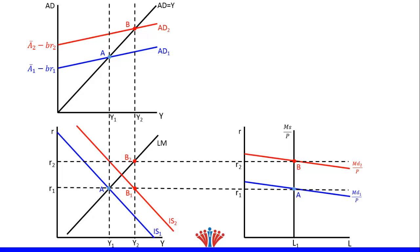Now the goods market is at equilibrium at point B and the money market is at equilibrium at point B, but the IS-LM model is not at equilibrium. The equilibrium point in the IS-LM model is the point of intersection between IS2 and LM, which we will label as point C.